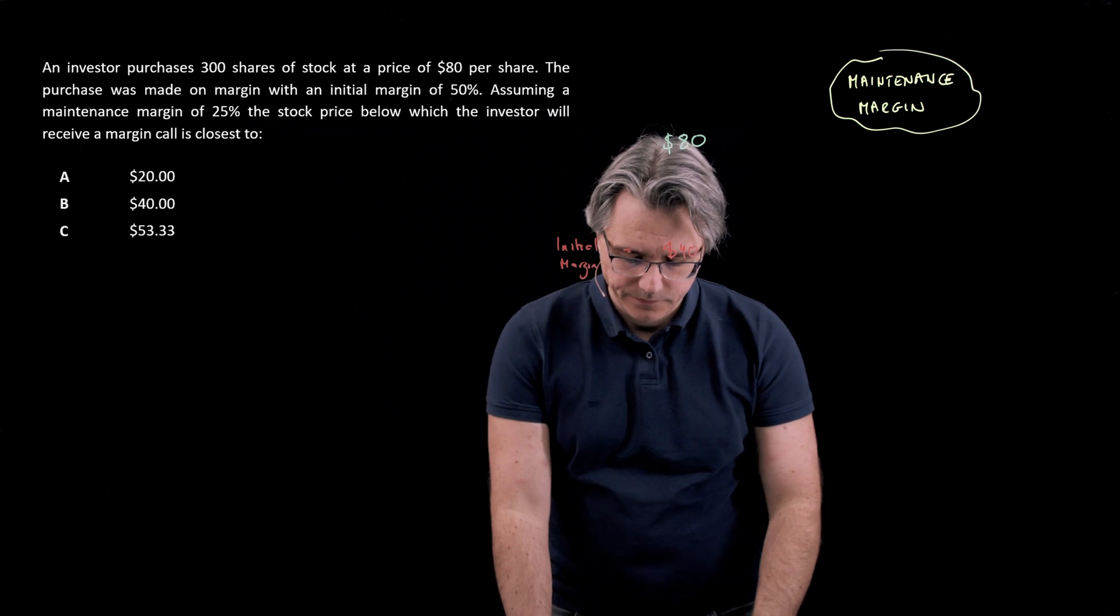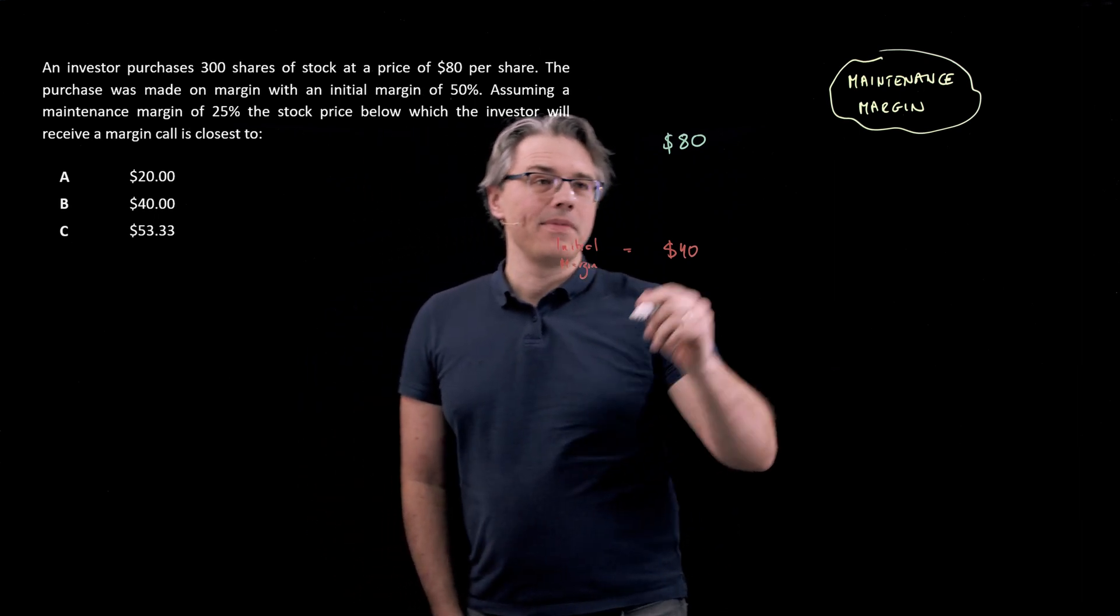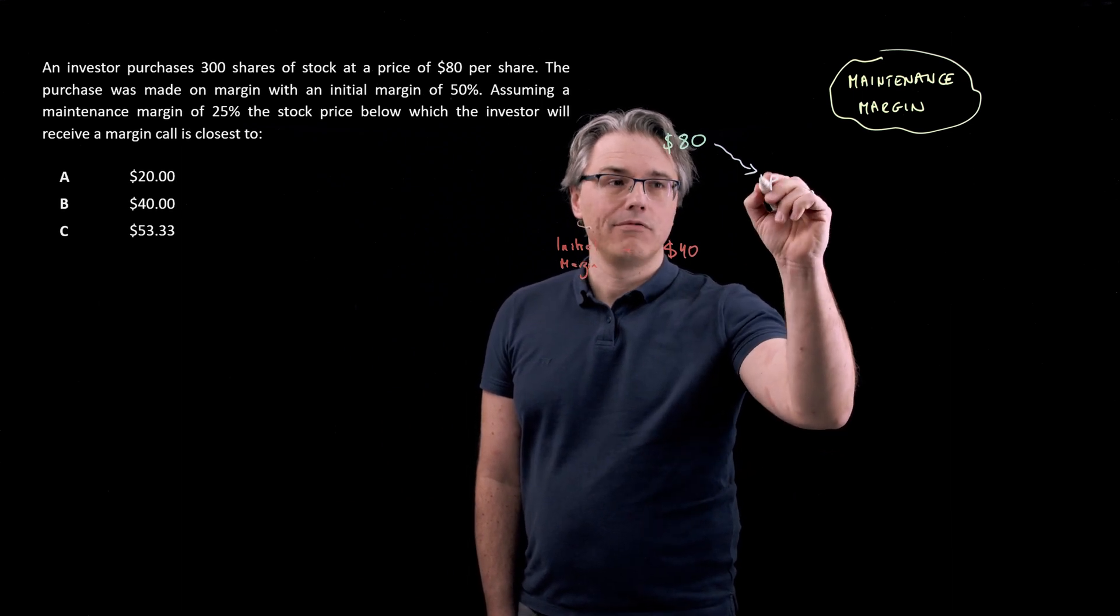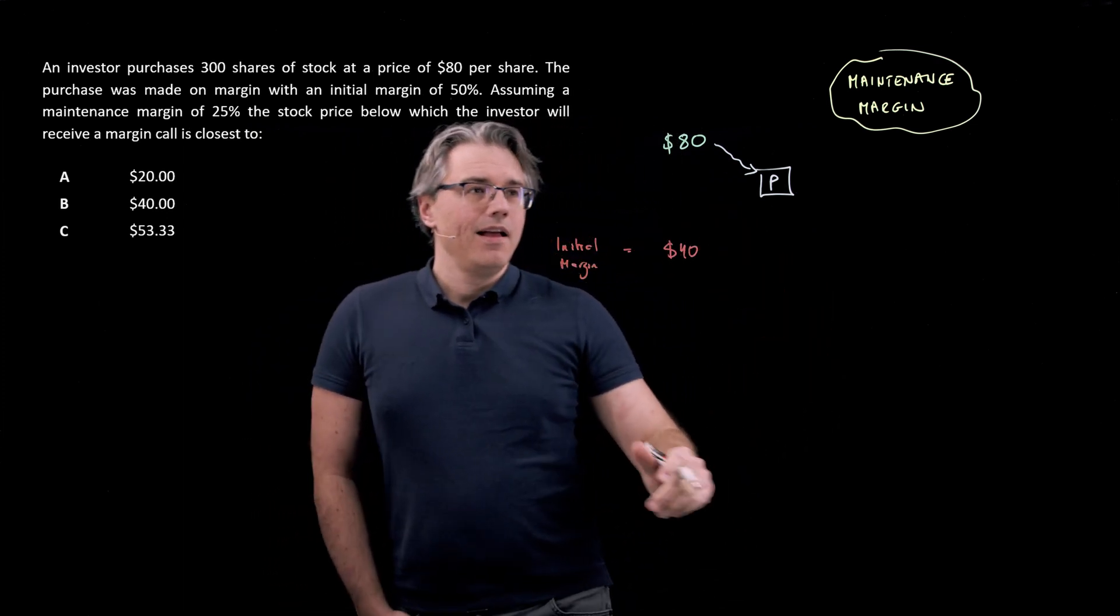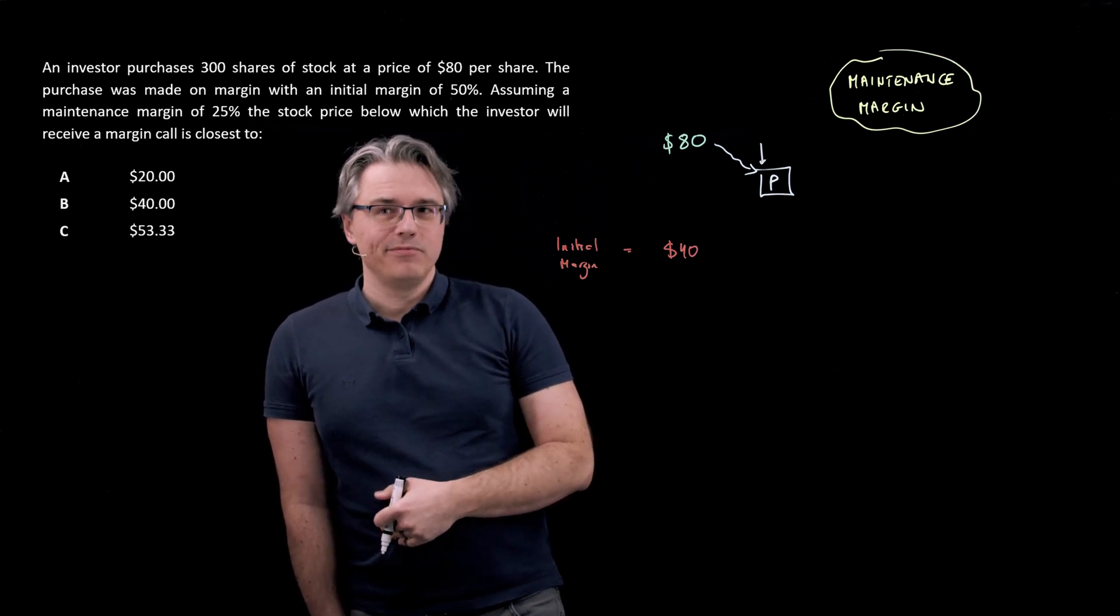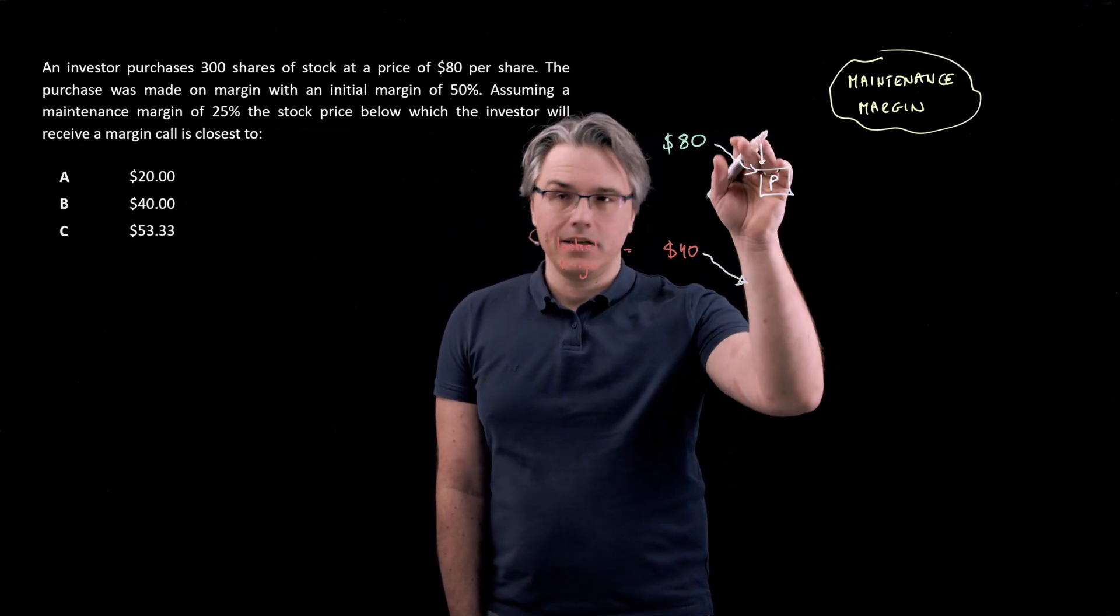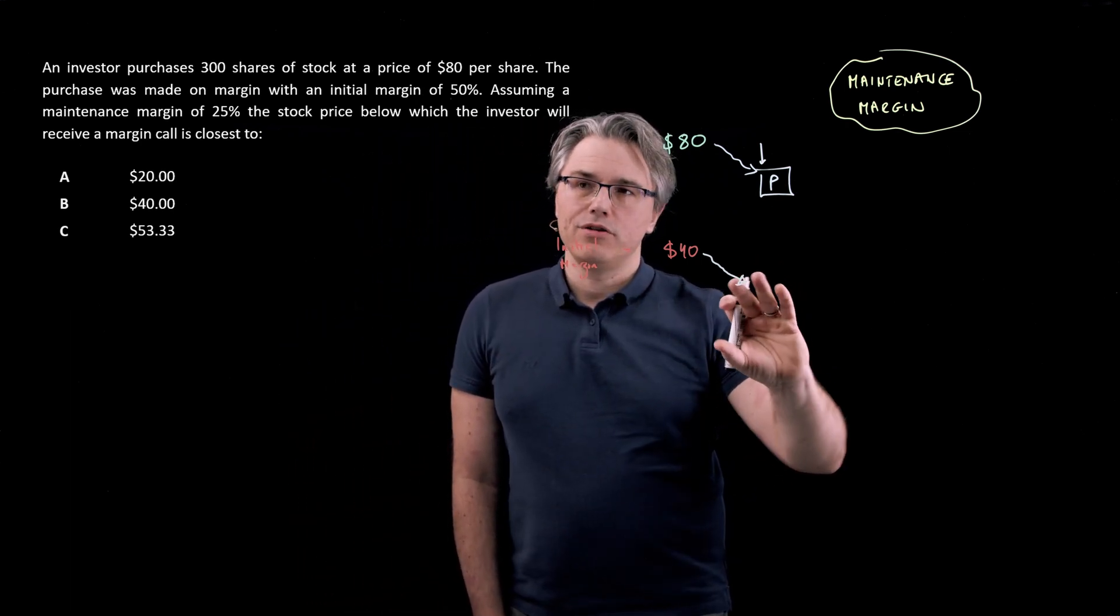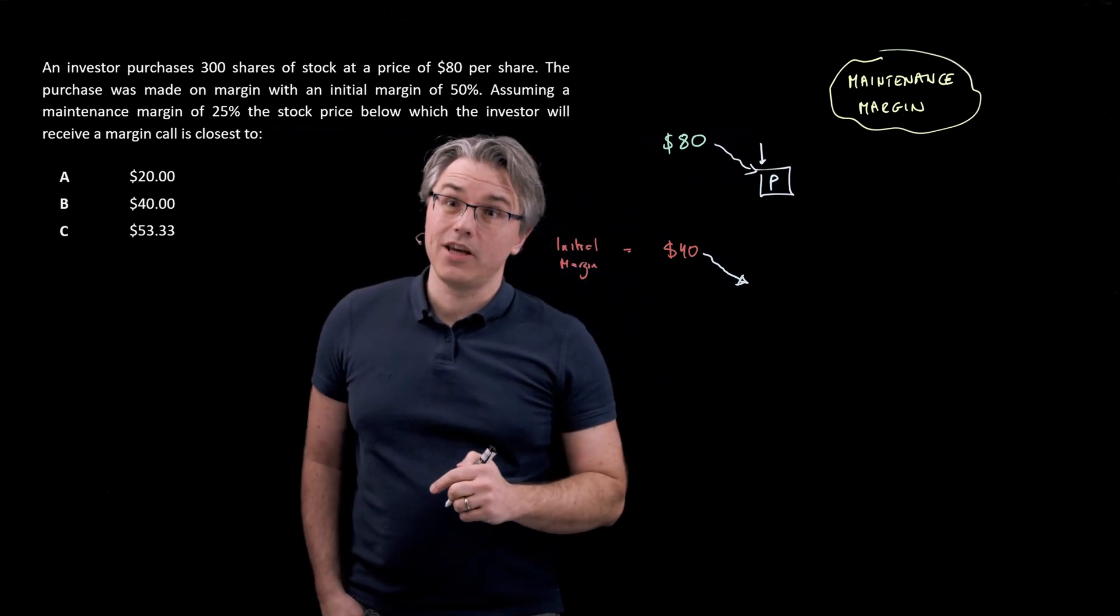Now, what may happen, obviously, is that the stock price may change. Potentially, and this is the risky bit, it may go down in value to some fresh level, which I'm going to call P, or denote P to symbolize the price. As the stock price potentially goes down, but this also pertains to movements upwards, what will happen is money will be deducted in case of price drops from your margin account. So the level of your margin account is going to go down or potentially up in response to what's happening to the share price or the stock price.